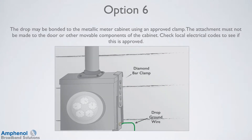With option number 6, the drop is bonded to the metallic meter cabinet using an approved clamp. The attachment must not be made to the door or other movable components of the cabinet. Before you use this option, make sure it is approved by the local power company and electrical inspector, as many power companies don't allow this. Clamps put on improperly block access to opening the meter box, and set screws can remove the enamel coating and allow rust to form.